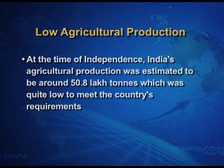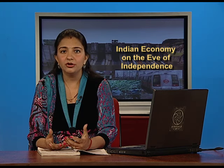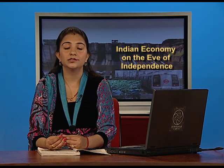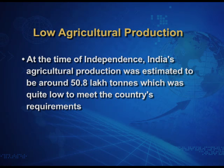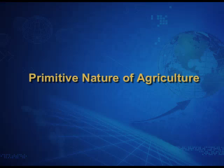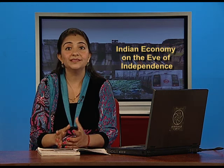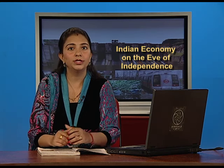Agricultural production was quite low to meet the needs of the population dependent on this sector. At the time of independence, India's agricultural production was estimated to be around 50.8 lakh tons, which was quite low to meet the country's requirements. Secondly, the agricultural sector was primitive in nature — backward in nature.